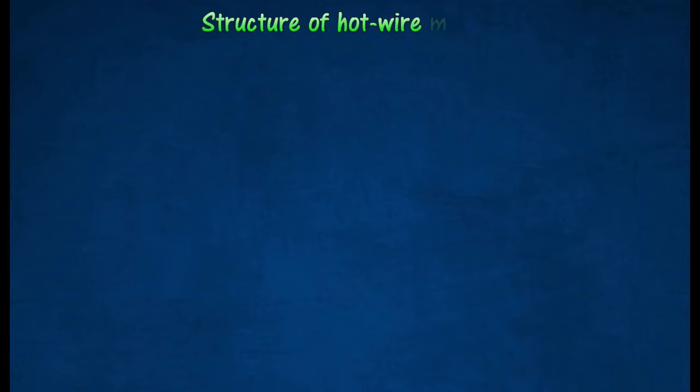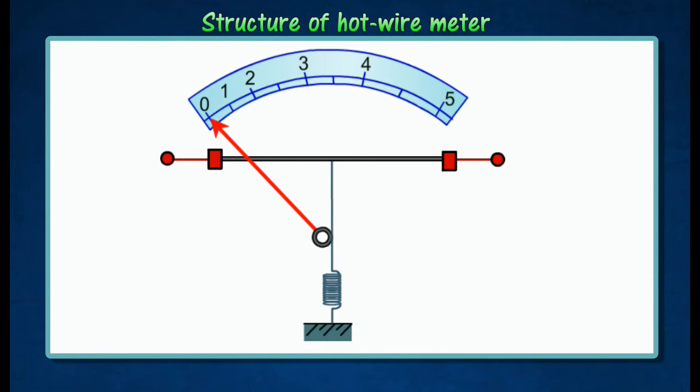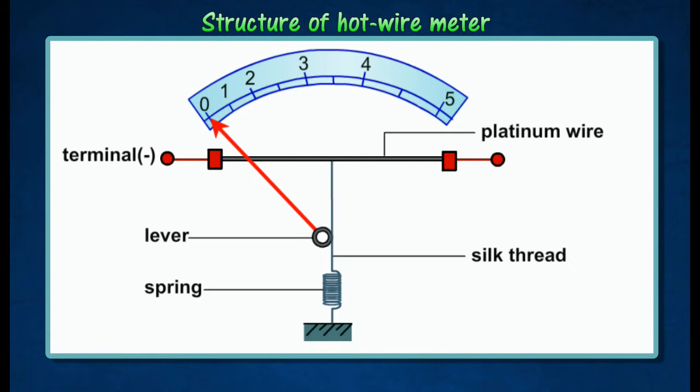The following diagram shows the basic structure of a hot wire meter. The hot wire meter consists of a fine platinum wire connected to the terminals of the meter, a silk thread with one of its ends connected to the center of the platinum wire, and the other end wound round a lever before being attached to a fine spring.